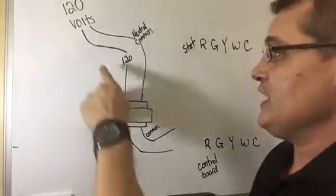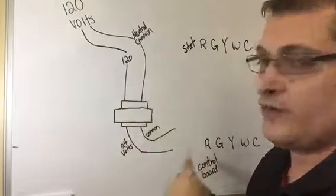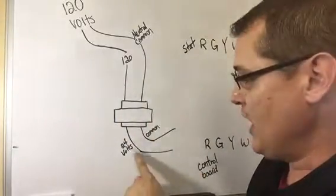What a transformer does, you put 120 volts into it, you get 24 volts out, a 24 volt wire and a common.